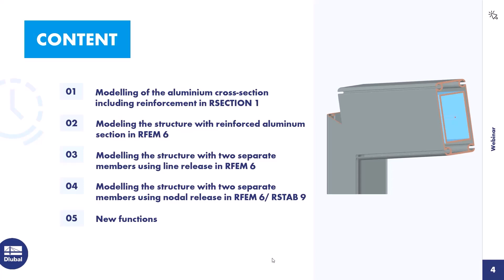Thank you, Andreas, for the introductory words. I would also like to welcome you to today's webinar. The topic is the modeling of structures with reinforced aluminum cross-sections. The reinforcement can be made of steel or aluminum, and there are several options for creating these reinforcements. The aluminum cross-section including reinforcement can be created as one cross-section in R-Section.